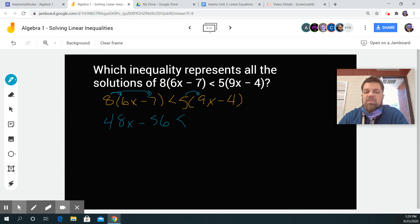Over here, what's 5 times 9x? 45x. And then lastly, what's 5 times negative 4? Negative 36.